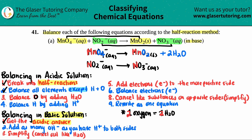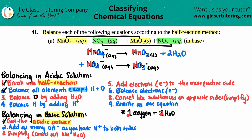Now for the bottom half reaction: I have two oxygens on the left and three oxygens on the right, so I need to add one more on the left side. That would be one H2O on the left. This step is done.